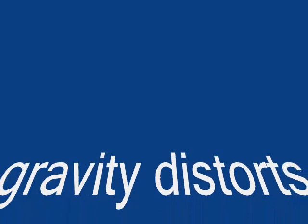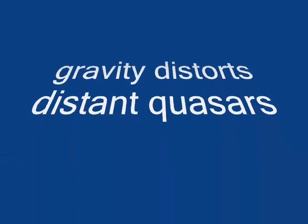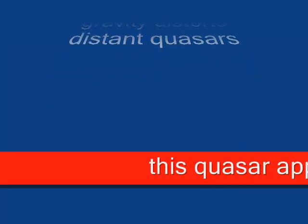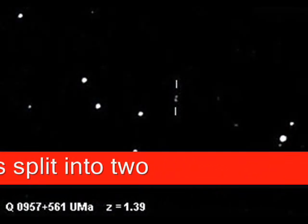The gravitational field of galaxies between us and the quasar can sometimes distort the quasar's light.